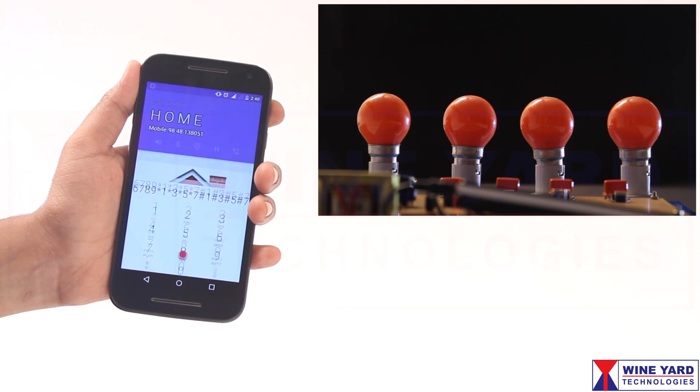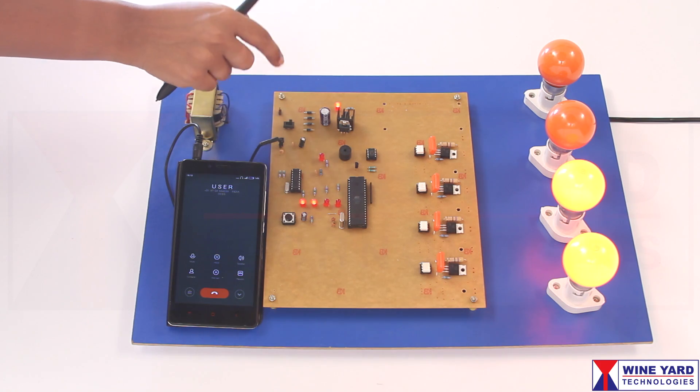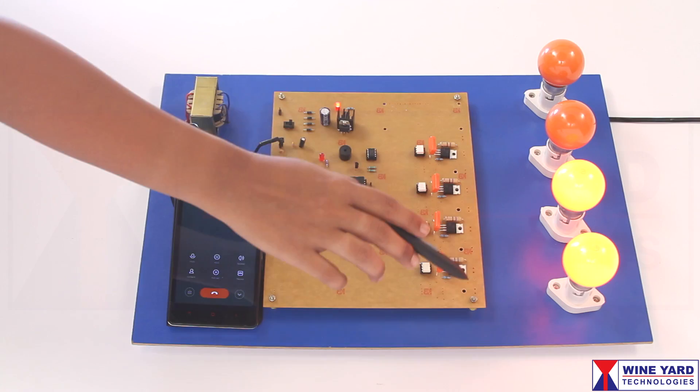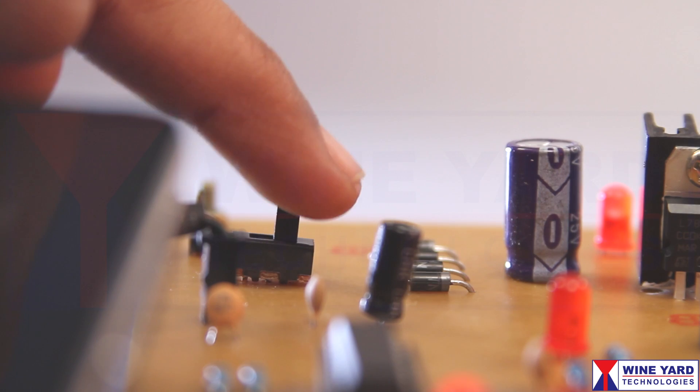Then disconnect the call. Let us take the event of power failure condition and we'll see how the kit works. For example, if two of the devices are ON and now the power is OFF.